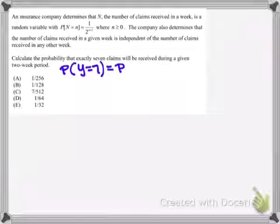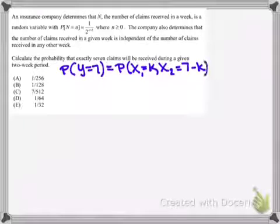And I guess one way we can write this is the probability that the first week is k and the second week is 7 minus k. Because that would mean that the sum of x1 and x2 is going to equal 7. I'm going to give you a second to process that, and then we'll get moving on with the question.